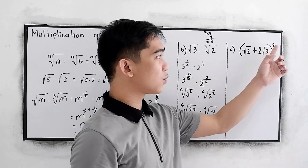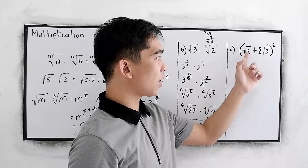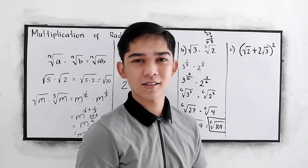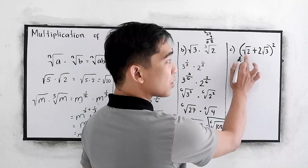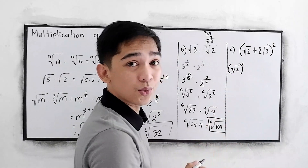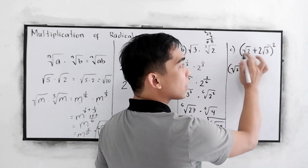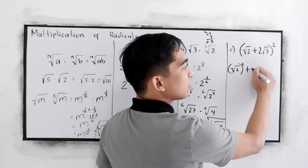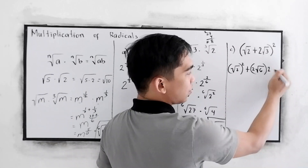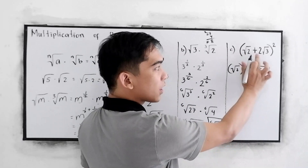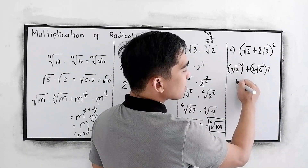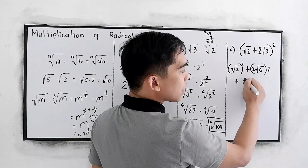Now let us work on letter C: the quantity square root of 2 plus 2 square root of 3, raised to 2. Let us use the shortcut for squaring a binomial. The shortcut is: square the first term — so we have square root of 2, squared — then multiply the first and second terms times 2, plus the square of the second term, which is 2 square root of 3, squared.